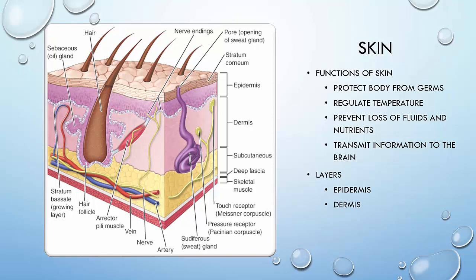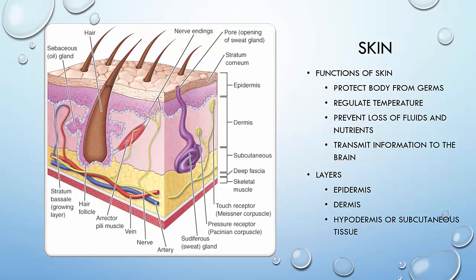The dermis contains the sweat glands, hair follicles, sebaceous glands, blood vessels, and a complex array of nerve endings. The subcutaneous tissue is composed of fat for insulation and energy storage.